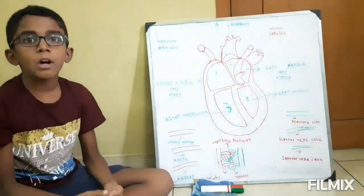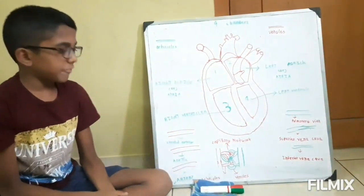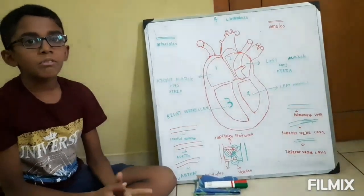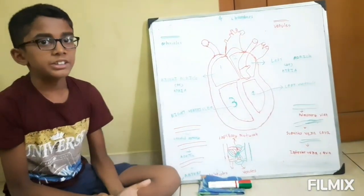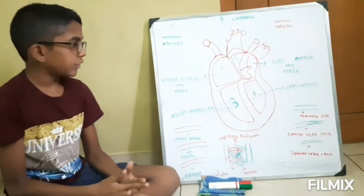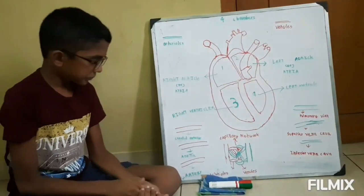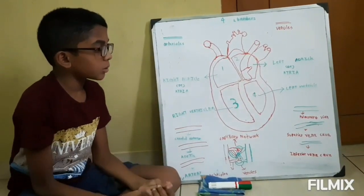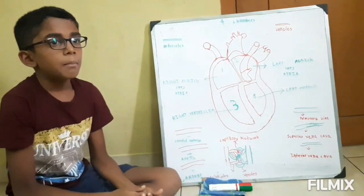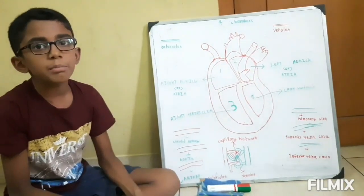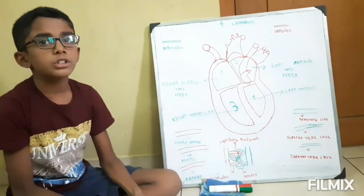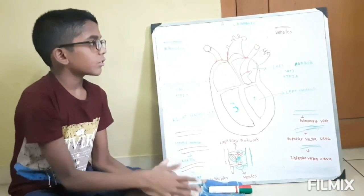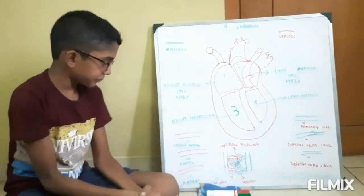Now let's see about blood vessels. There are two types of blood vessels. The first one is called Artery and the second one is called Vein. Blood vessels' main job is to give blood to all parts of the body.